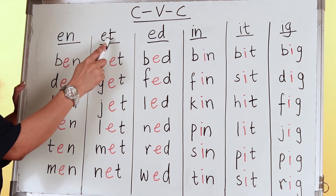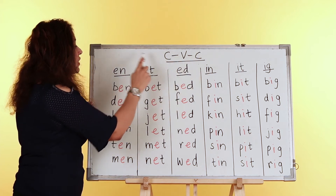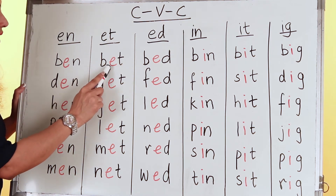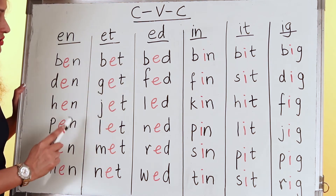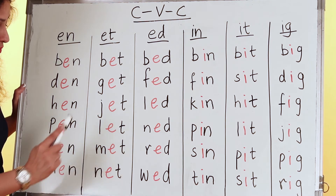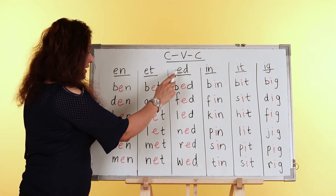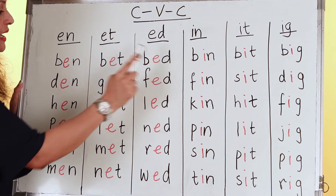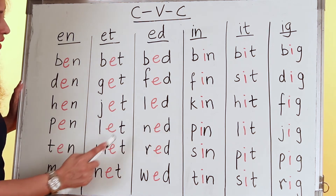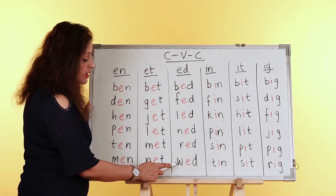The next family is ET. See — all these words have the same consonant vowel consonant pattern: a consonant in front, a vowel in the middle, and a consonant at the end. We have BET, GET, JET, LET, MET, and NET. Another vowel E family is ED: BED, FED, LED, NED, RED, and WED.